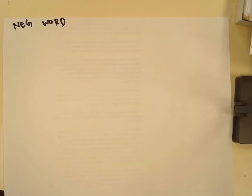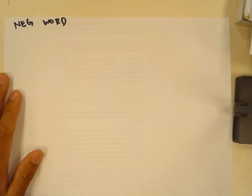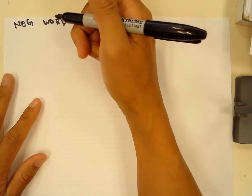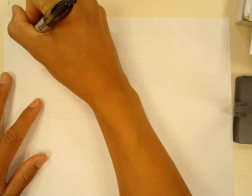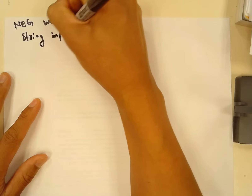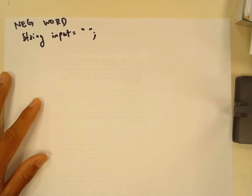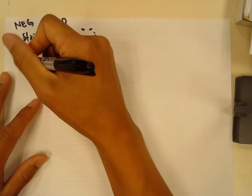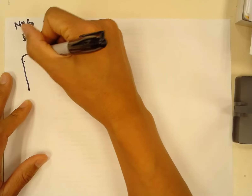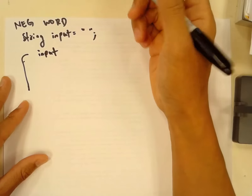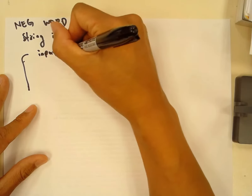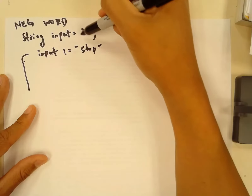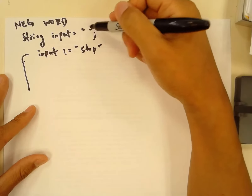This is about the negative words program. The first thing we want to do is have the program ask the user to enter in words one at a time, and they will type 'stop' if they want to stop entering words. We'll need a string input variable, set it equal to some empty value, and then have a while loop that keeps going as long as input is not equal to the word 'stop'. It will enter the loop on the very first iteration because input is equal to empty string.